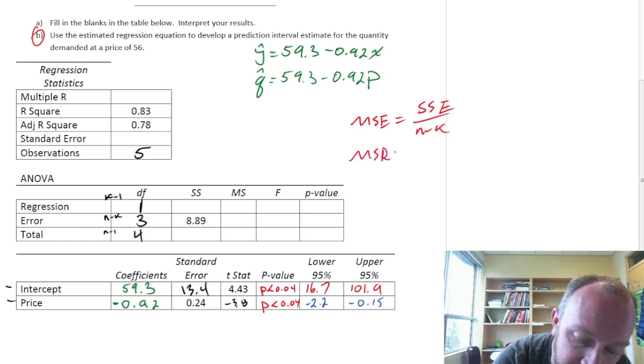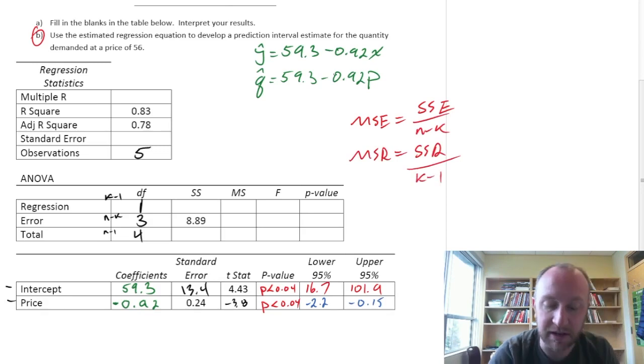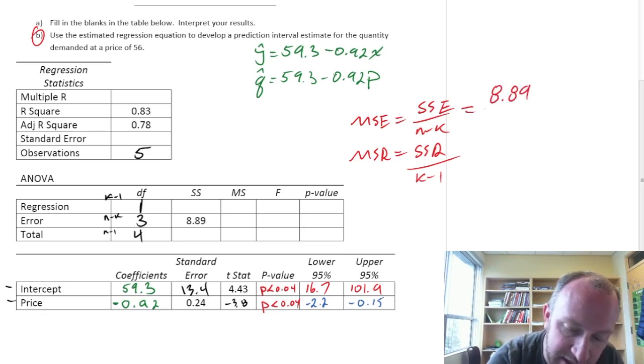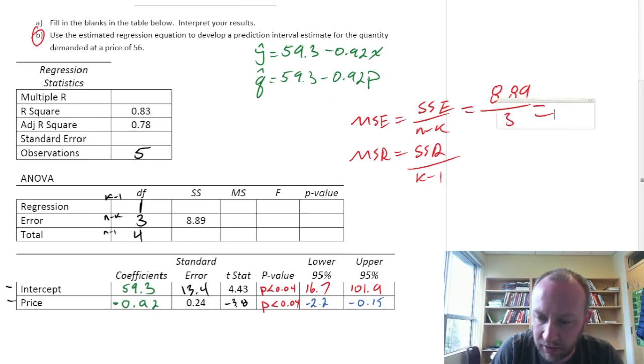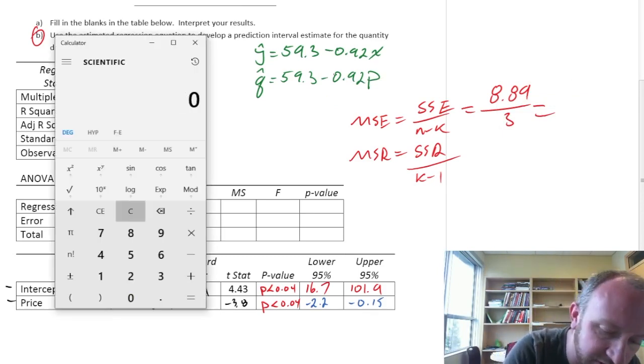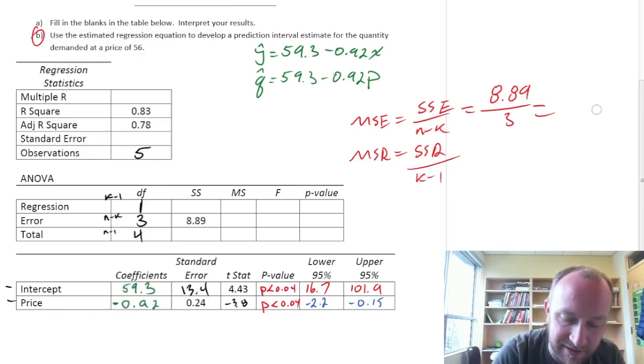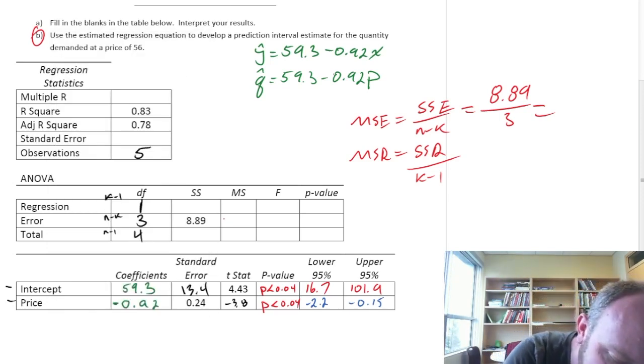Well the mean squared error is just the sum of squared error divided by its degrees of freedom which is n minus k. Mean square regression, this is sum of squares due to regression divided by k minus 1. So for MSE, well this one it was given to us this 8.89 divided by, excuse me, its degrees of freedom is 3. So for this one this is probably the easiest calculation of this exercise. 8.89 divided by 3 so I have 2.96 for our mean squared error. Okay so that's good.